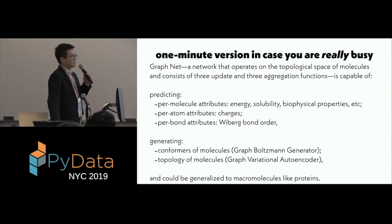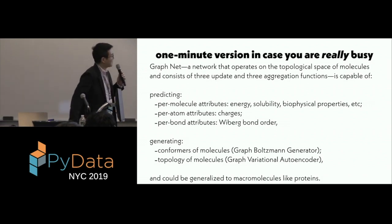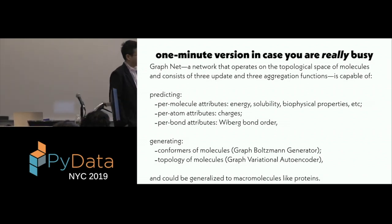So just a one-minute version of this talk in case you're really busy. GraphNet is a network that operates on the topological space of molecules, and it propagates and aggregates information between bonds and atoms. We show that it is capable of predicting per molecule, per atom, and per bond attributes, such as the energy of the molecule, the charge of the atoms, and the bond order of the bonds.